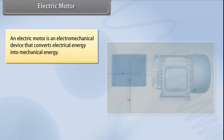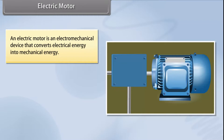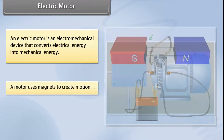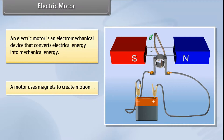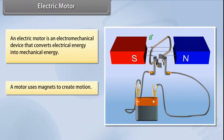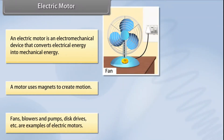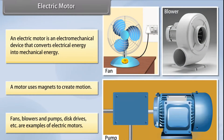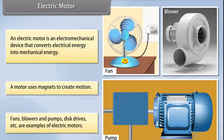An electric motor is an electromechanical device that converts electrical energy into mechanical energy. A motor uses magnets to create motion — inside an electric motor, the attracting and repelling forces of a magnet create rotational motion. Fans, blowers, pumps, and disc drives are some examples of electric motors.